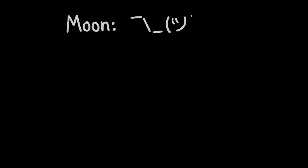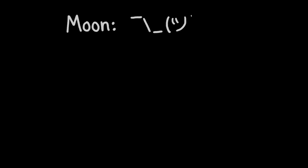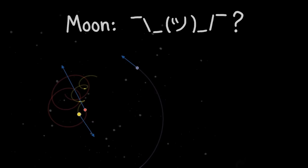Or maybe there's simply no one definition for moon that captures both the complexity of the different ways that stuff can orbit other stuff, and our nebulous, intuitive, I-know-it-when-I-see-it idea of what makes a moon.